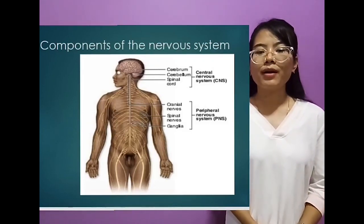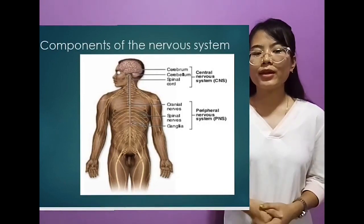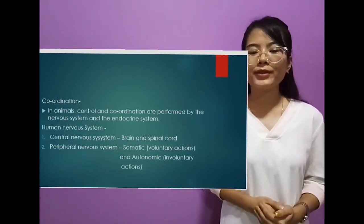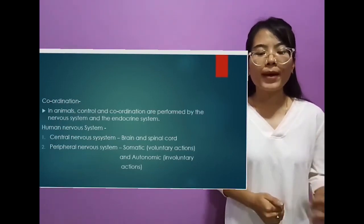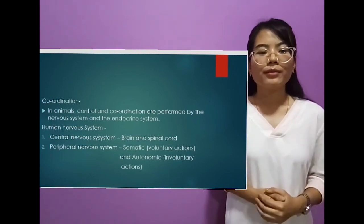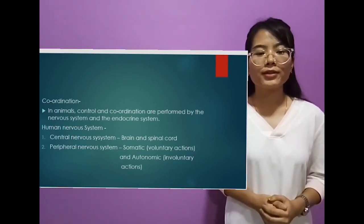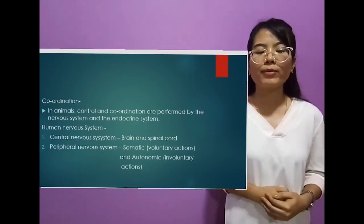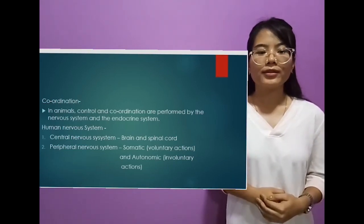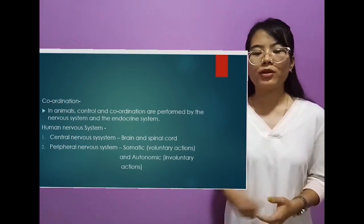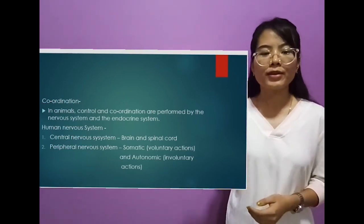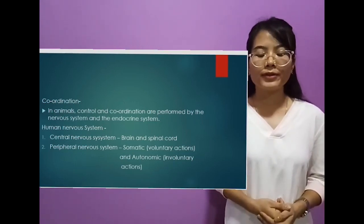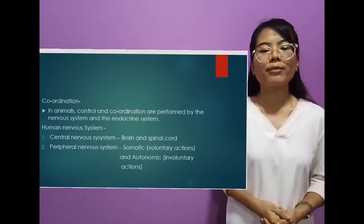The peripheral nervous system consists of the nerves that are projecting from the central nervous system. It is again divided into two parts: somatic and visceral, or autonomic. Somatic controls voluntary actions, such as the moving of our hand. Visceral, or autonomic, controls involuntary actions, such as digestion inside our stomach and heartbeat.